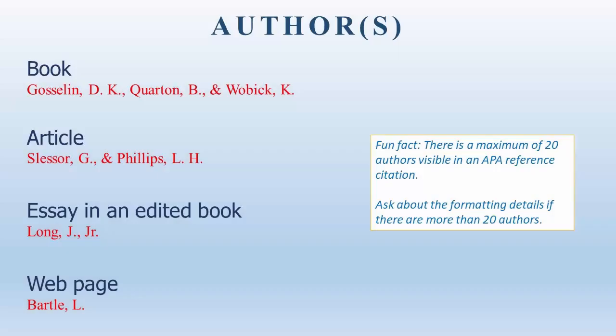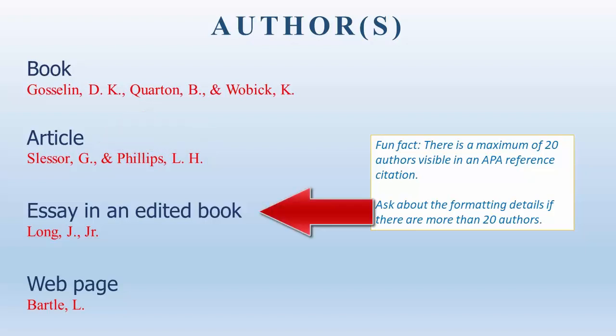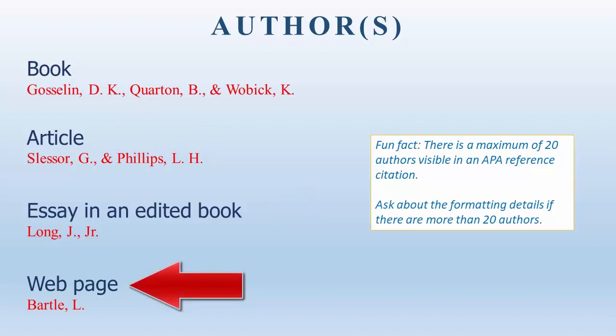While you may cite many kinds of objects in APA, I will be covering the four most common: the book, the article — specifically the scholarly peer-reviewed article — an essay in an edited book, and a web page.